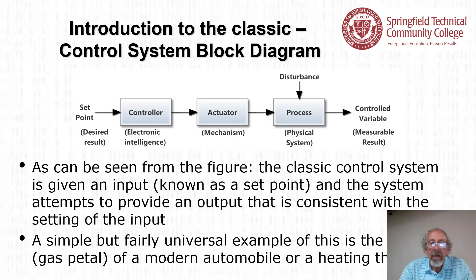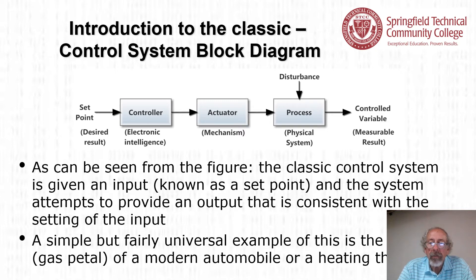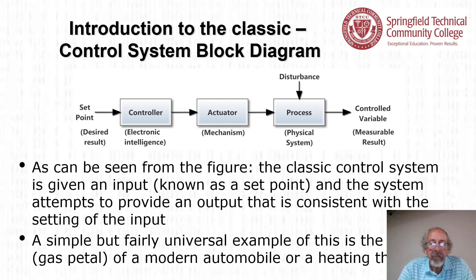The classic control system block diagram is shown here. We have a controller block, an actuator, and a process that we want to control. Normally we put in some type of a set point — that is, we have a desired result. The system then attempts to provide an output that's consistent with the setting of the input.